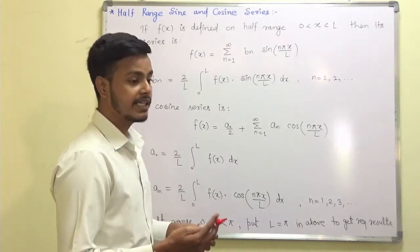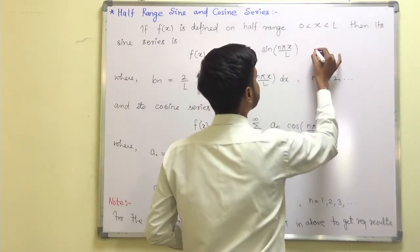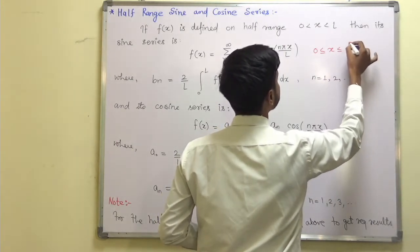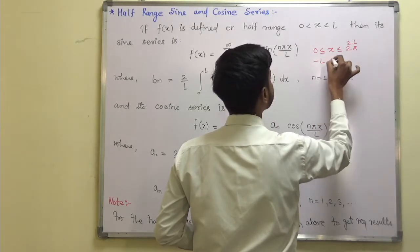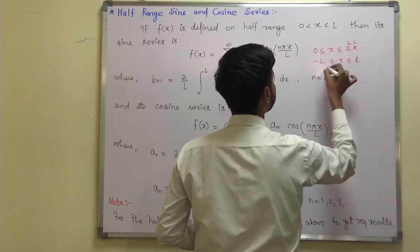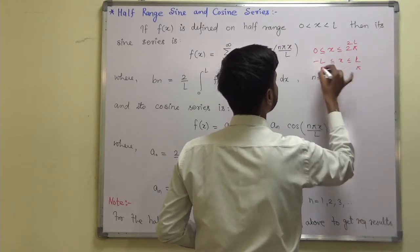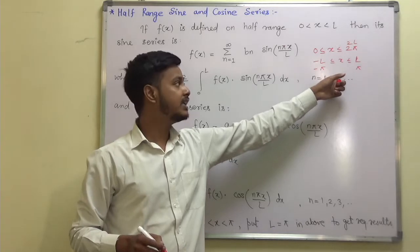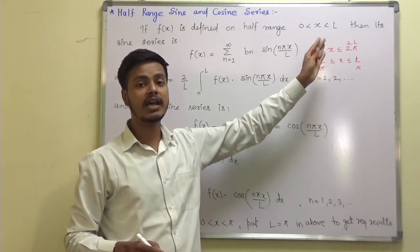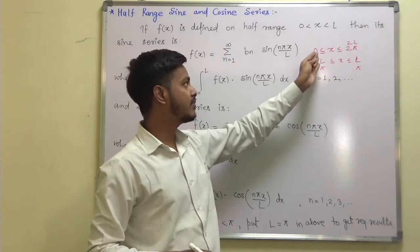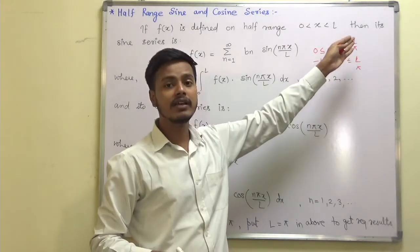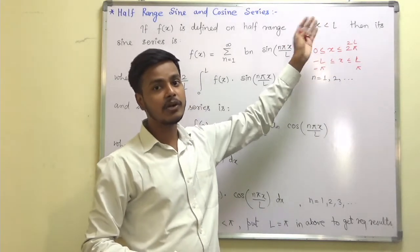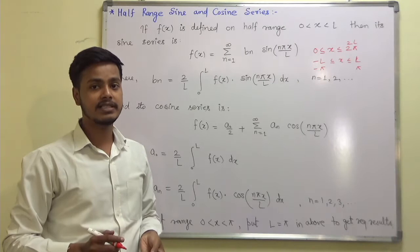Why is it called half range? Because earlier we have seen the interval to be 0 ≤ x ≤ 2π, or sometimes 2l, or sometimes −l ≤ x ≤ +l, or −π to π. These are called the full range. And when we restrict this range to only half, like instead of 0 to 2l, if you restrict it from 0 to l, this means we are talking about the half range Fourier series.